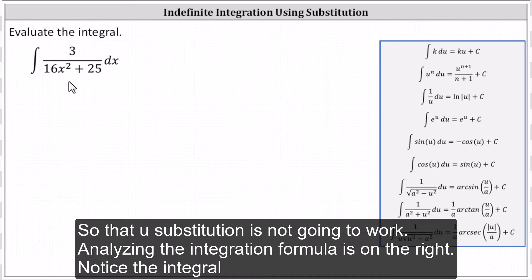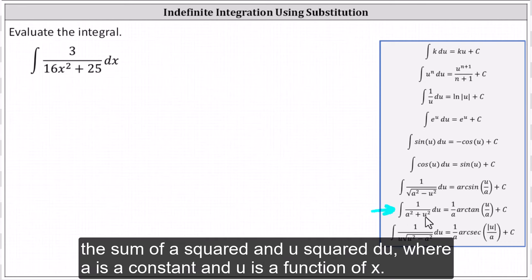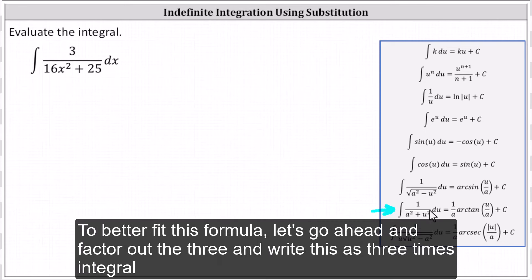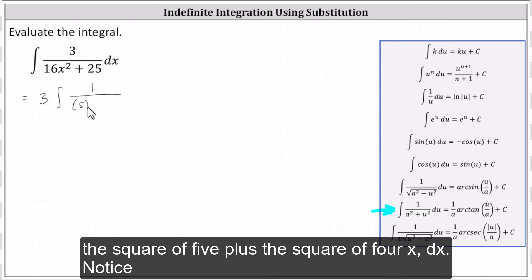Analyzing the integration formulas on the right, notice the integral resembles this integration formula here in the form of one divided by the sum of a squared and u squared du, where a is a constant and u is a function of x. To better fit this formula, let's go ahead and factor out the three and write this as three times integral of one divided by, let's write 16x squared plus 25 as the square of five plus the square of four x dx.